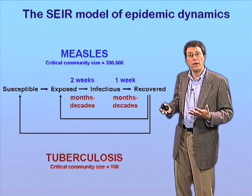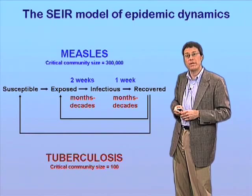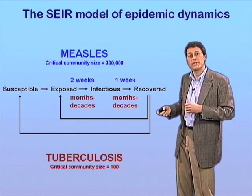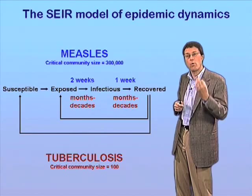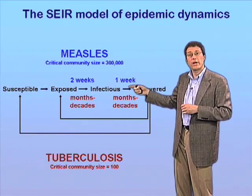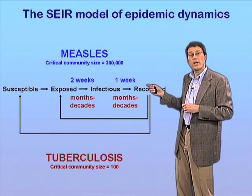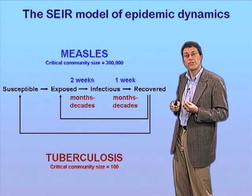This is nicely illustrated using the so-called SEIR model of epidemic dynamics, in which susceptible human populations are broken down into four compartments: a compartment of susceptibles — individuals who have not yet been infected but who could be infected; a population of exposed individuals, who have acquired the infection but are not yet transmitting it; an infectious compartment, describing those who both have the pathogen and are actively transmitting it; and a recovered population, indicating individuals who have gotten over the illness and are no longer infectious.